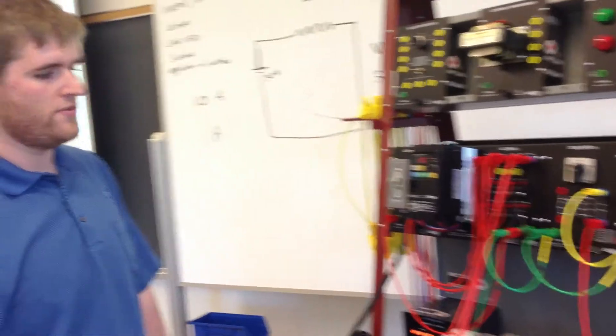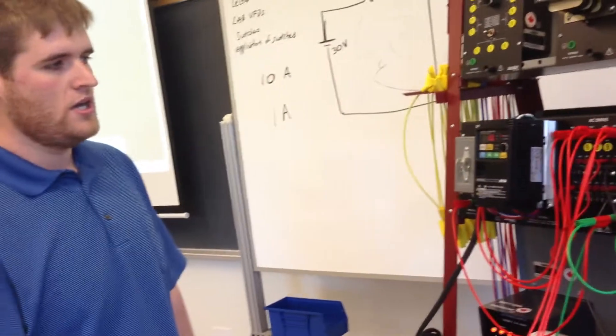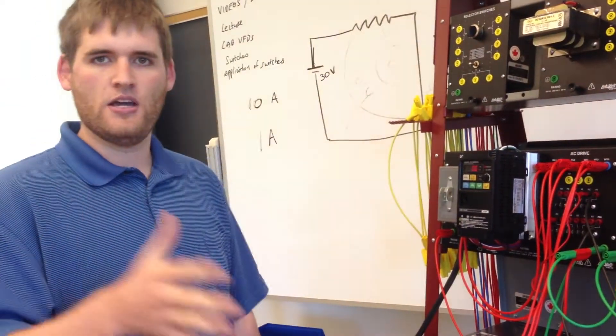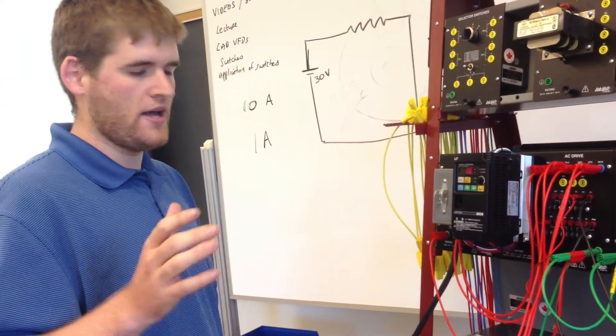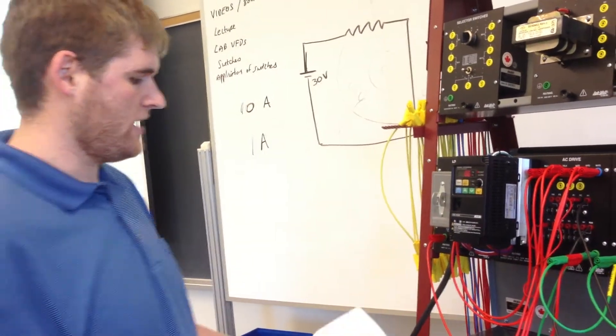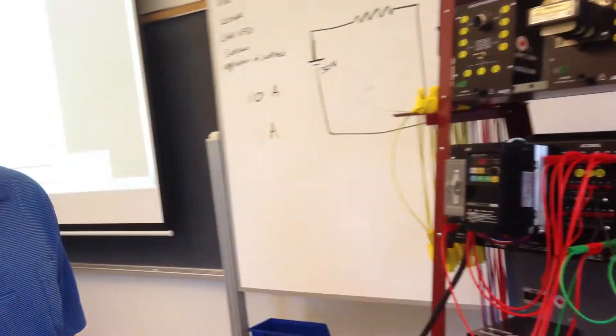So basically what the overload limit functions provide for is so that we can set it so that once it hits a certain current it's going to scale back the speed of the motor to stay at that current so that we don't burn up motors. So there's a couple of different parameters you can set involved with that.